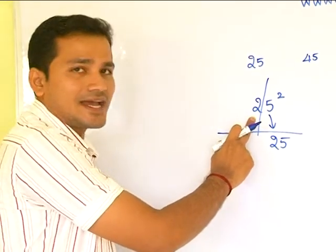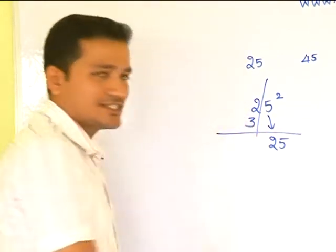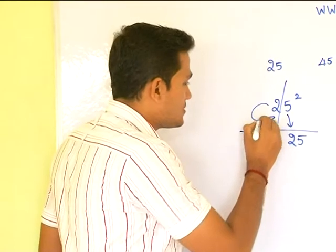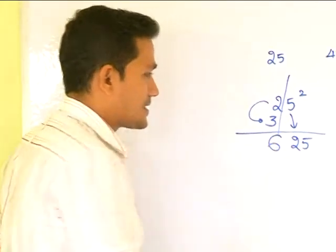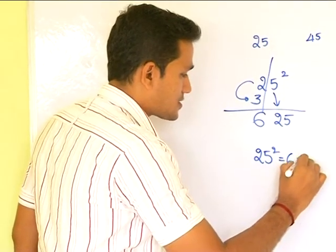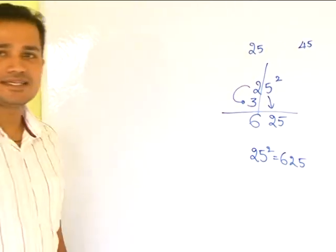Now, you have 2 on the left side. Take the next higher digit which becomes 3. Multiply these two digits, 2 into 3 would be 6. So, 25 square is 625. Very easy, right?